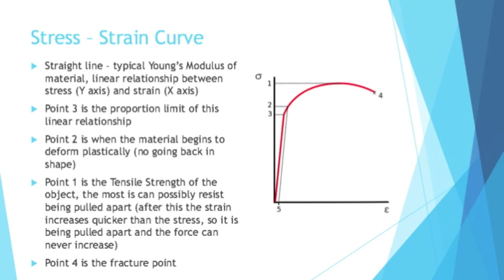Point 2 is when the material begins to deform plastically. So it's not elastic anymore. There's no going back in shape. It won't be like a rubber band returning to its original form. It's a permanent plastic deformation. Then it begins on that curve you see after point 2. At point 1, that is the tensile strength of the object. That is the most the object can possibly resist being pulled apart. After that point, the strain is increasing quicker than the stress. So it's being pulled apart at a rate the stress cannot increase at. It's pulling apart and the force is lessening because it's pulling apart.